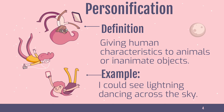A personification is giving human characteristics to animals or inanimate objects. An example: 'I could see lightning dancing across the sky.' Lightning doesn't dance, but we're giving it human characteristics — making a point that we're seeing lightning that seems to be dancing.